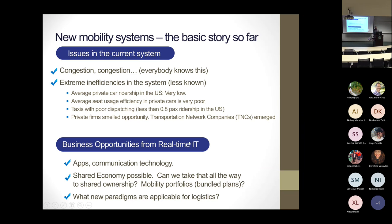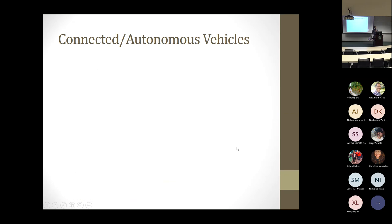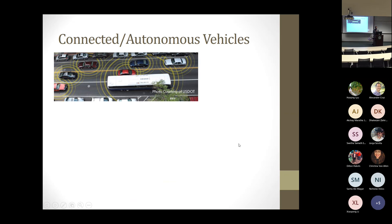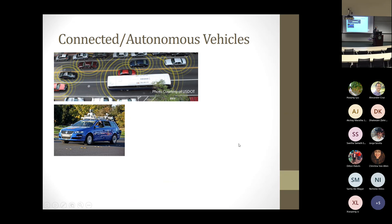There is business opportunity. The shared economy is very much possible, but how much sharing and what kind of things can we share? What new paradigms are applicable? If you bring in logistics and freight movement, for instance. Just to get started and connect to autonomous vehicles — everybody has a slide on this, so I'll just throw some pictures. These are standard slides from USDOT. All of you know what it is.